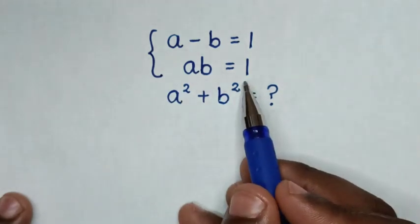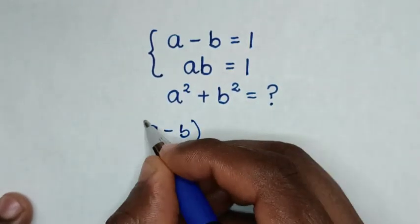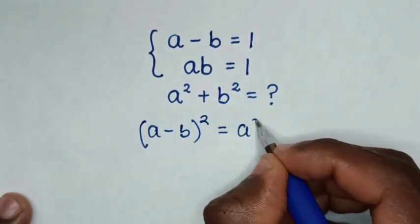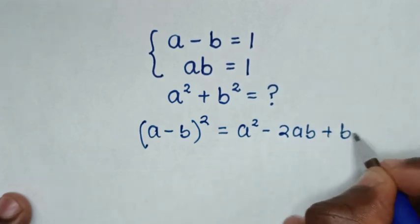So from this system of equations, we'll apply the rule A minus B bracket square is equal to A square minus 2AB plus B square.